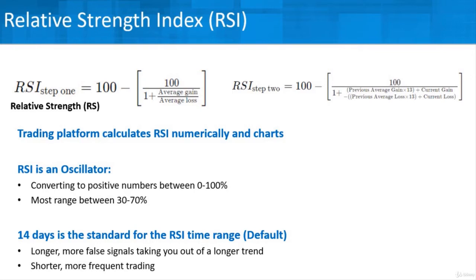Most of what you'll see on a chart will range between 30 and 70%. The default for RSI, as it was originally developed, is 14 trading days — that's the standard time range. You could use other time ranges, like 14 hours or 14 minutes, but the standard was built around 14 days. If you go longer, you'll see more false signals. If you go shorter, you'll experience more frequent trading with buy and sell signals firing rapidly. So 14 days seems to be the sweet spot, and I'd recommend staying with that default in your trading platform.